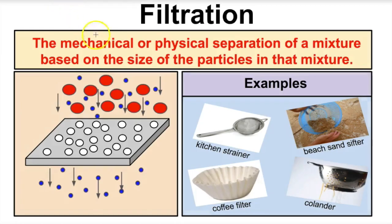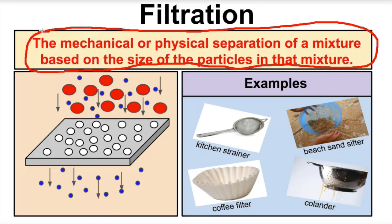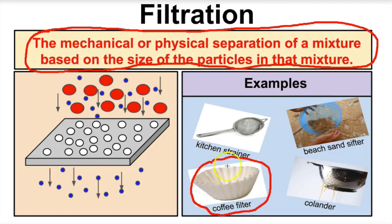Next, we're going to talk about filtration. Filtration is the mechanical or physical separation of a mixture based on the particle size of the particles in that mixture. For example, a coffee filter — when you make a cup of coffee in the morning, you fill this coffee filter up with coffee grounds. This coffee filter has tiny microscopic holes in it. You add water, and the microscopic water molecules pass through the tiny holes in the coffee filter, leaving behind the coffee grounds, so you can enjoy a sip of coffee rather than having to chew it.